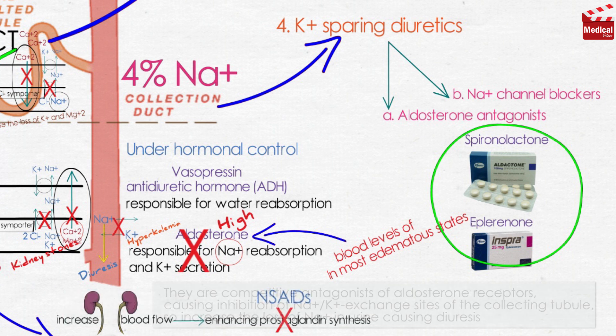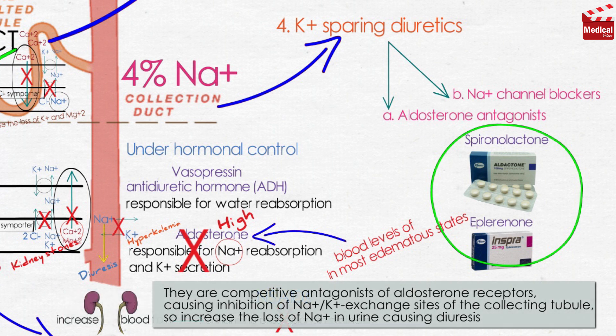They are competitive antagonists of aldosterone receptors, causing inhibition of sodium and potassium exchange sites of the collecting tubule, so they increase the loss of sodium in urine causing diuresis.